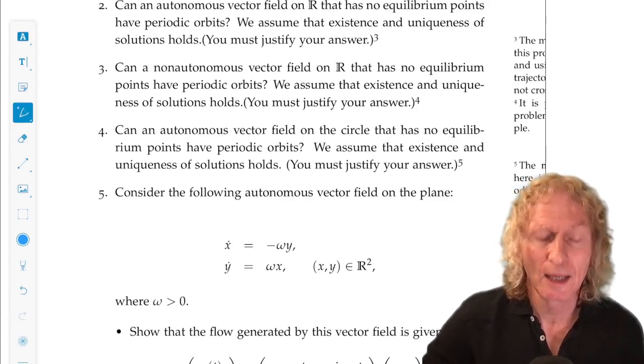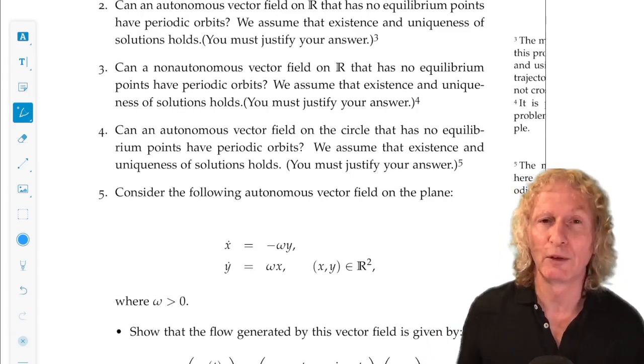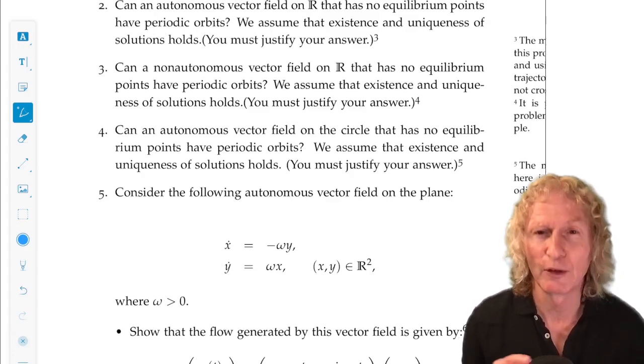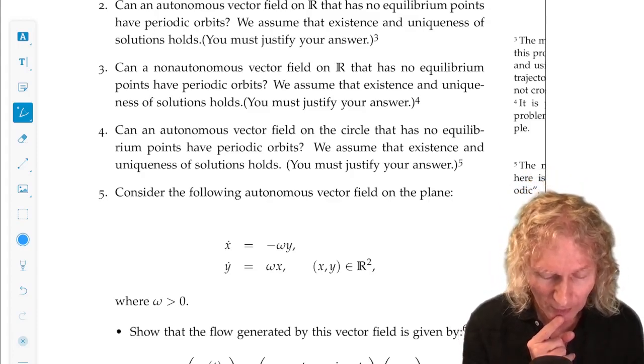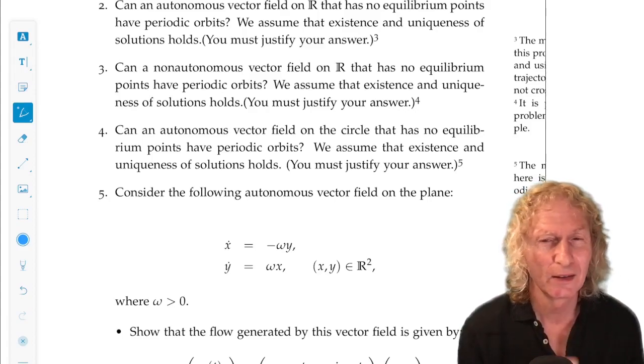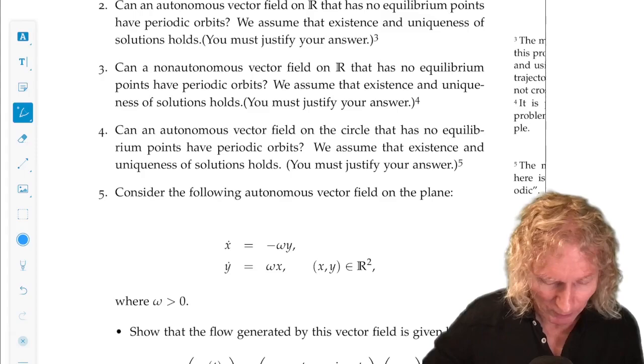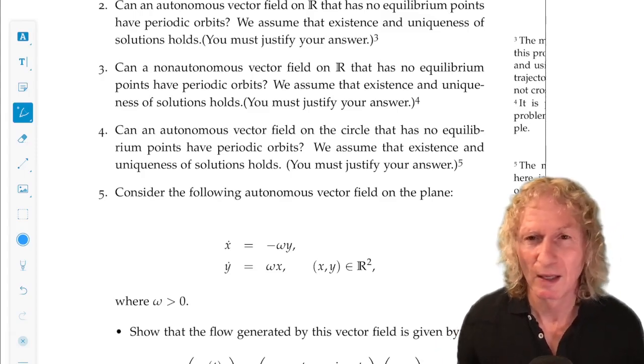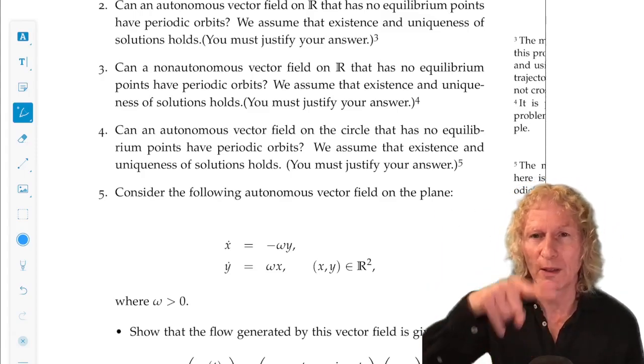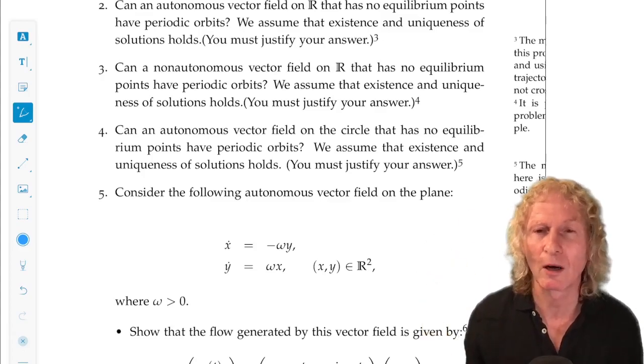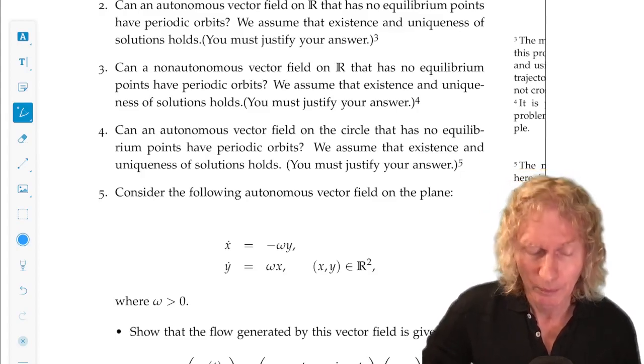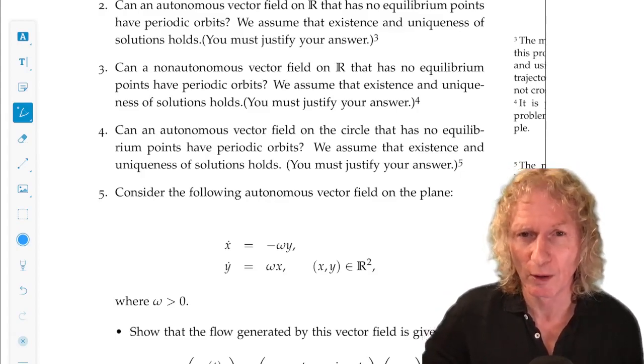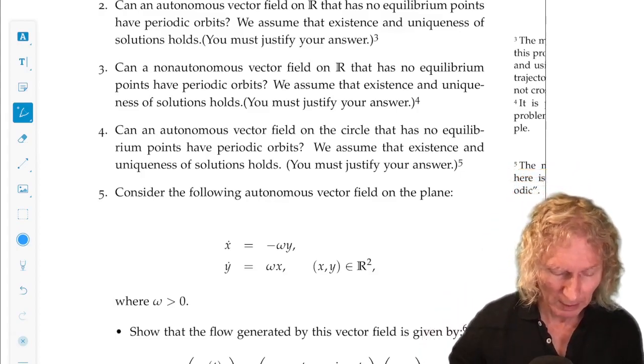Problem four. Can an autonomous vector field on the circle that has no equilibrium points have periodic orbits? This one is a sort of a subtle one. It tends to trip up students. But yes, every orbit is periodic because it just goes round and round and round on the circle and always coming back to where it was. Periodic. Periodicity. In the phase-based variable.